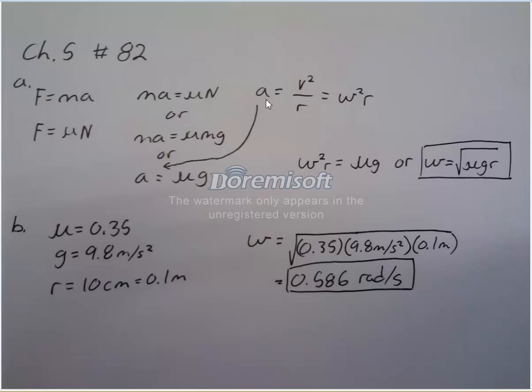So we also know that a equals the angular speed squared times the radius. We can just take that, plug it in for a, and we get the angular speed squared times radius equals coefficient times gravity.